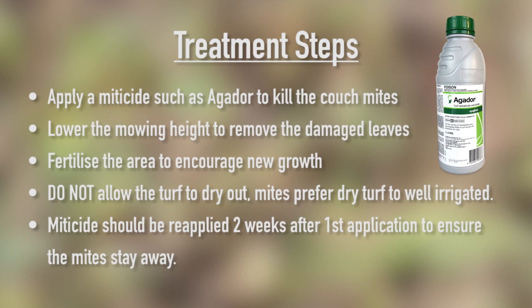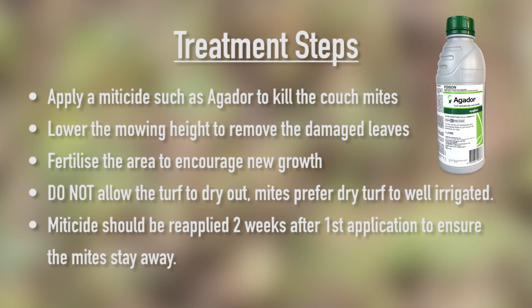Treatment steps: apply a miticide such as Acramite to kill the couch mites. Lower the mowing height to remove the damaged leaves. If possible, fertilize the area to encourage new growth. Do not allow the turf to dry out — mites prefer dry turf to well-irrigated turf. Miticide should be reapplied two weeks after the first application to ensure the mites stay away.